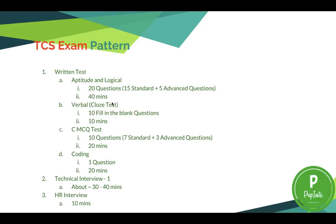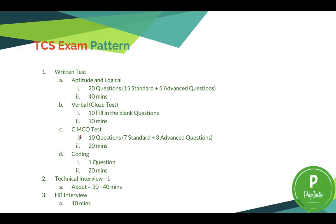The verbal section has changed from email writing to a cloze test — fill-in-the-blank type questions on prepositions, tenses, adjectives, or basic English. These are multiple-choice with negative marking. The CMCQ test has 10 questions in 20 minutes: 7 standard and 3 advanced. The standard questions are MCQ with negative marking; the advanced ones are fill-in-the-blank with no negative marking. There are about 4 to 5 easy and 2 tough questions in the standard portion.